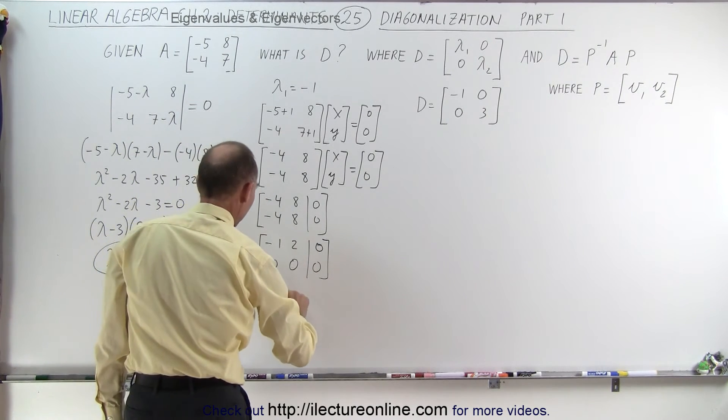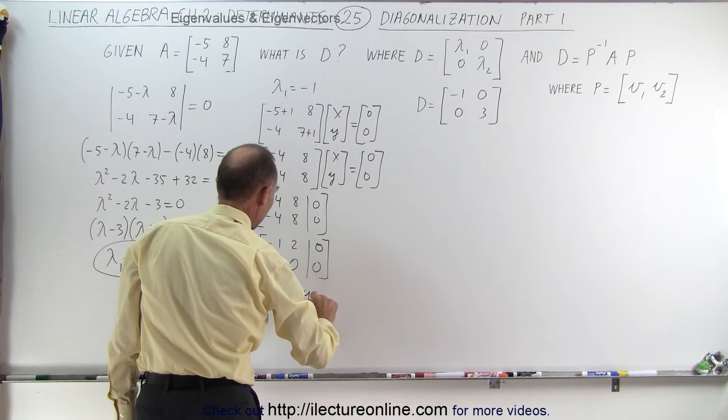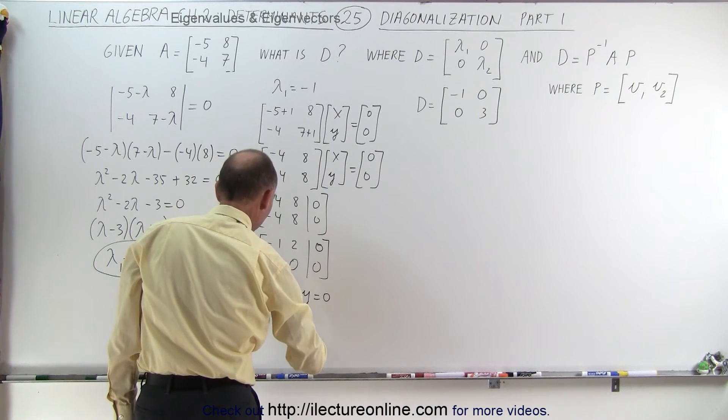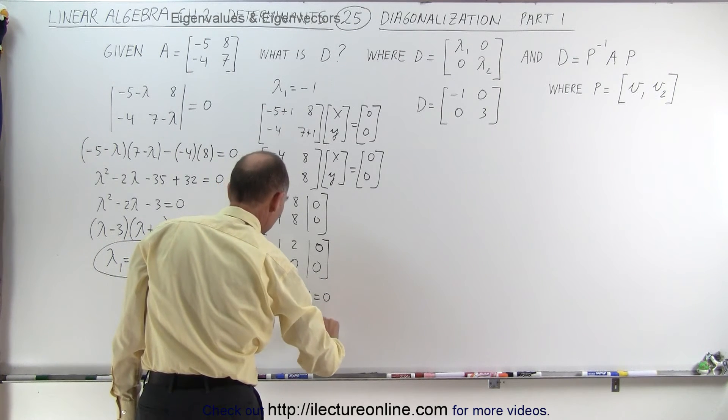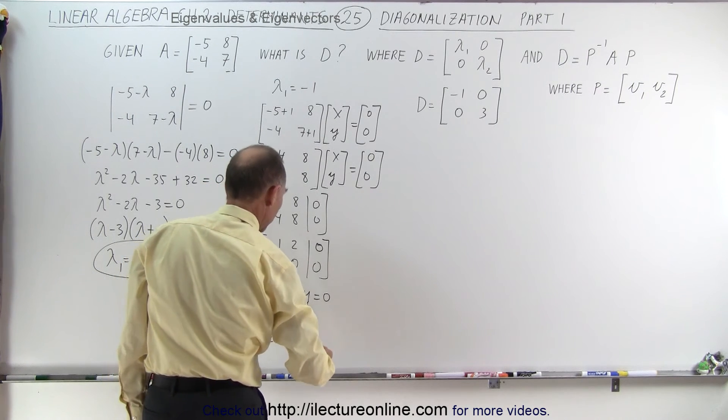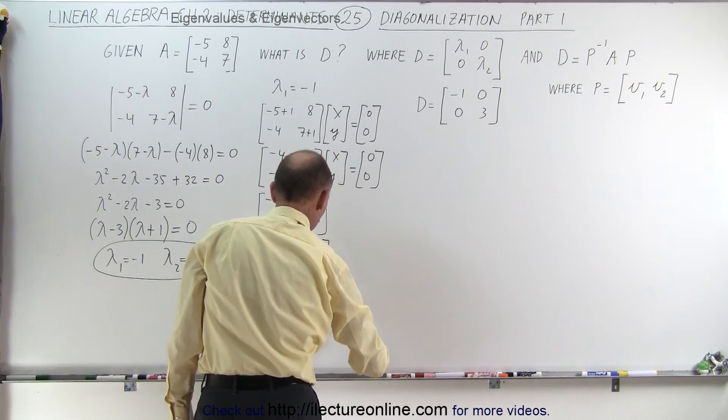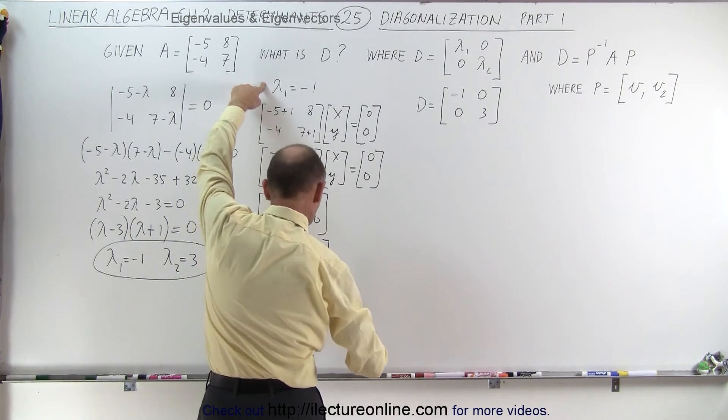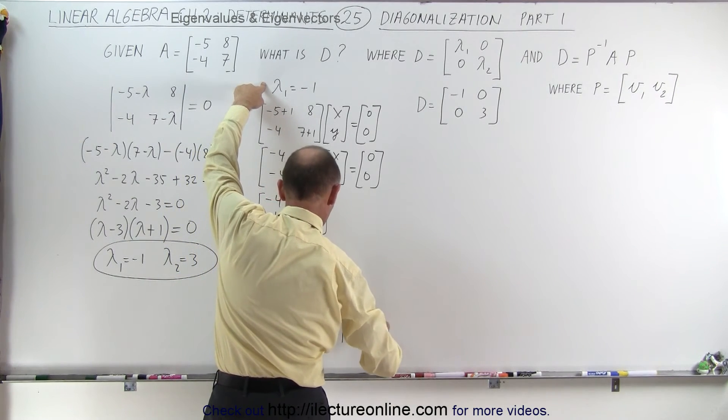Which means that minus x plus 2y equals 0, or x equals 2y, which means when y is equal to 1, x is equal to 2. And the eigenvector v1 corresponding to this eigenvalue is equal to 2, 1.